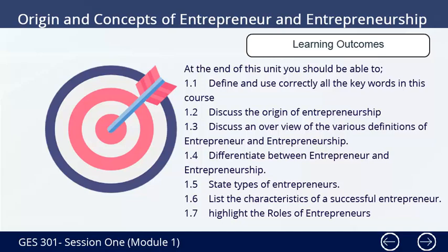Learning Outcomes. At the end of this unit, you should be able to: 1. Define and use correctly all the keywords in this course. 2. Discuss the origin of entrepreneurship. 3. Discuss an overview of the various definitions of entrepreneur and entrepreneurship. 4. Differentiate between the entrepreneur and entrepreneurship. 5. State five types of entrepreneurs. 6. List the characteristics of a successful entrepreneur. 7. Highlight the roles of entrepreneurs.